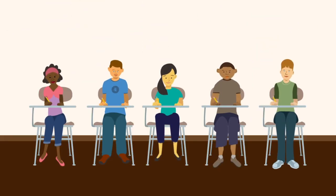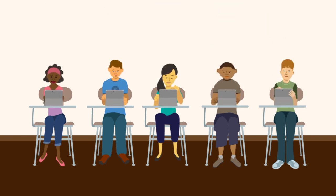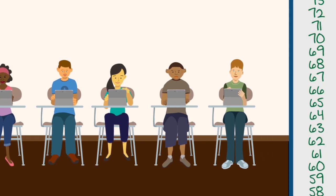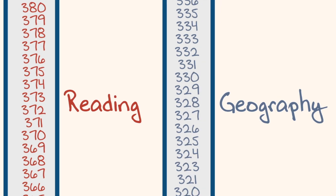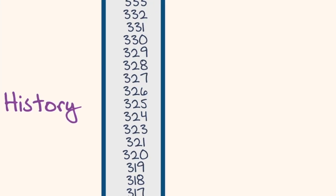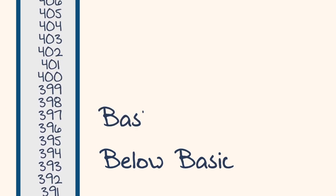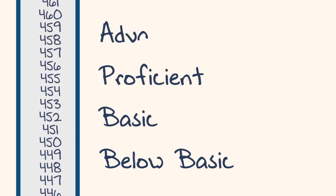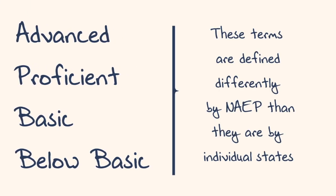By the year 2017, all subjects will be tested via personal computers or other devices. Scoring scales in different subjects may feature unique numerical ranges. Overall, results are classified as below-basic, basic, proficient, and advanced. Although these terms may be used by some states, they are defined differently by NAEP.